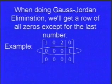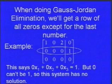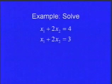That second row is trying to tell me that 0x1 plus 0x2 plus 0x3 equals 1. Well, 0 can't be 1, so that system can't work. It's inconsistent. See, I told you those were easy to spot.